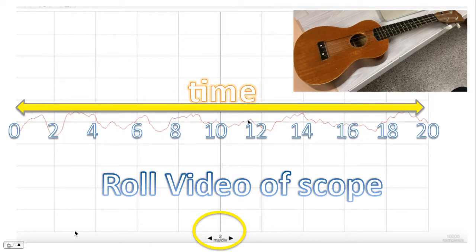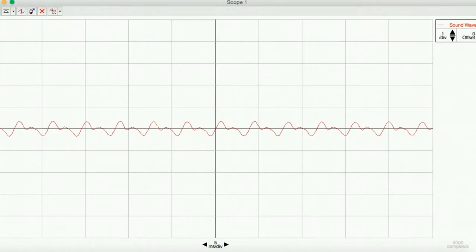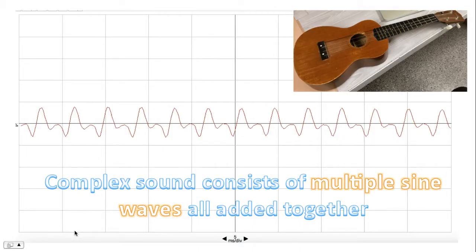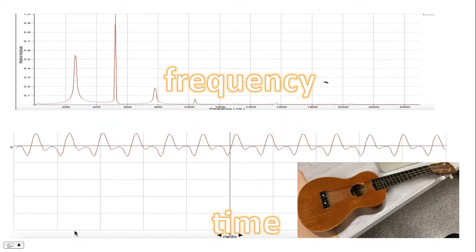Now let's roll a video of the scope that's produced for a ukulele. Notice that complex sounds consist of multiple sine waves all added together. It's no longer just a simple sine wave. Instead, it seems to be that there's multiple sine waves. And so complex sounds consist of more than one frequency. As a result, when looking at the second graph, it's much more complex. It's no longer a simple sine wave.